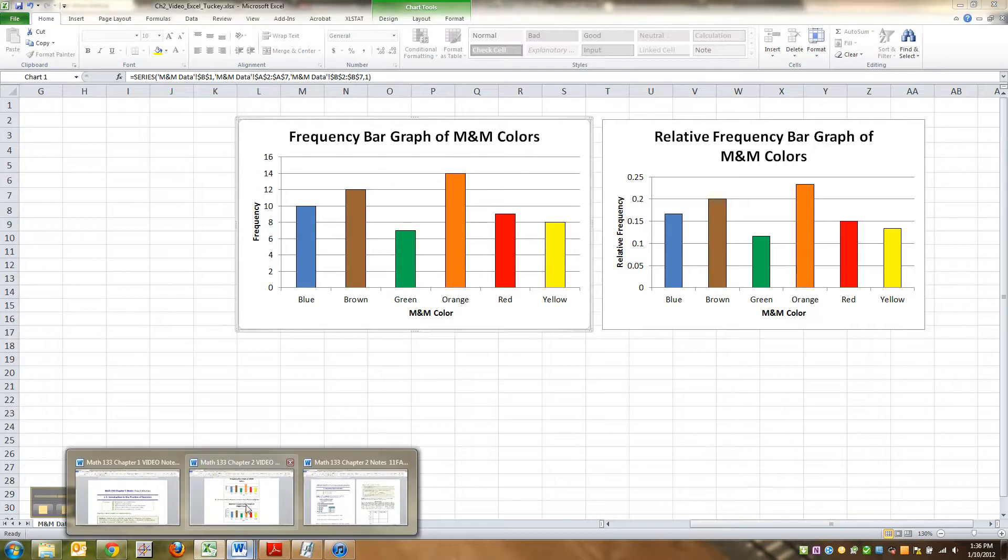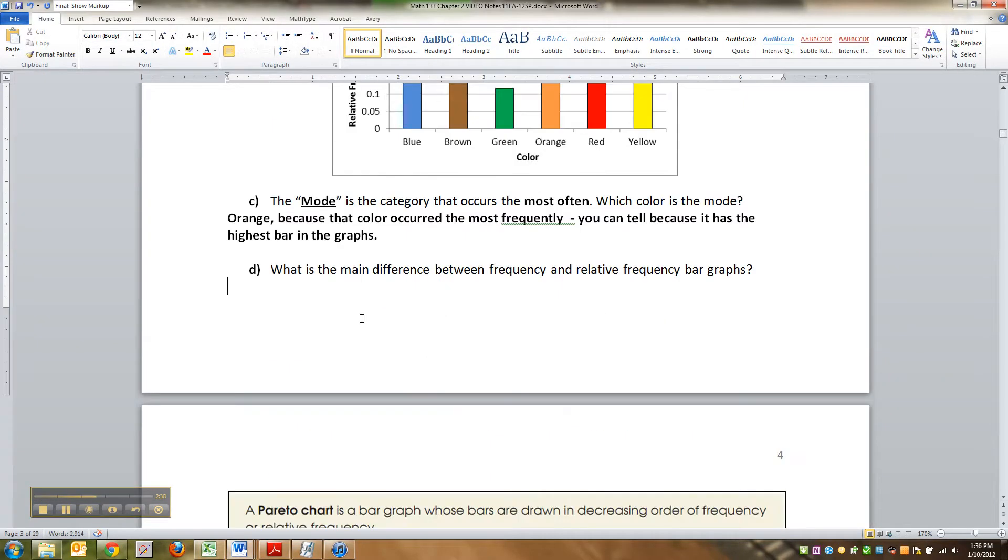So the big difference is that relative frequency bar graphs use percents, i.e. decimals, relative frequency for the y-axis, the vertical axis.